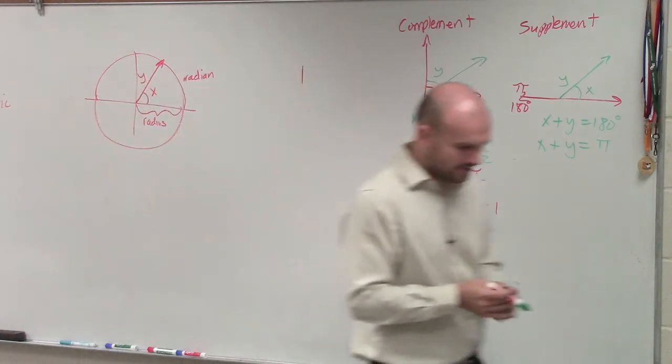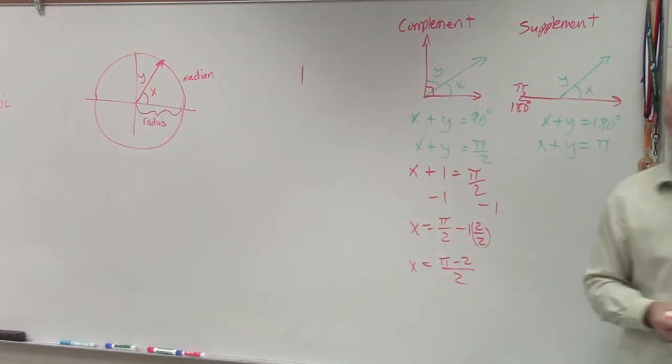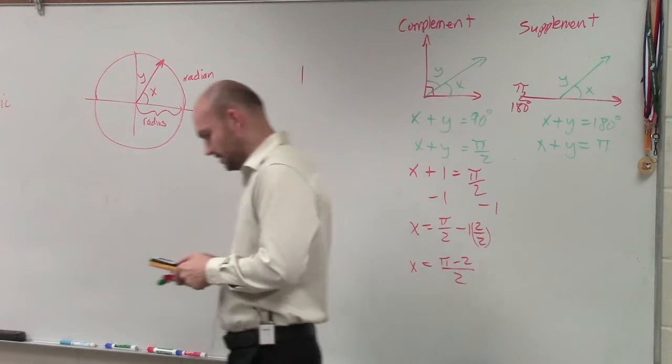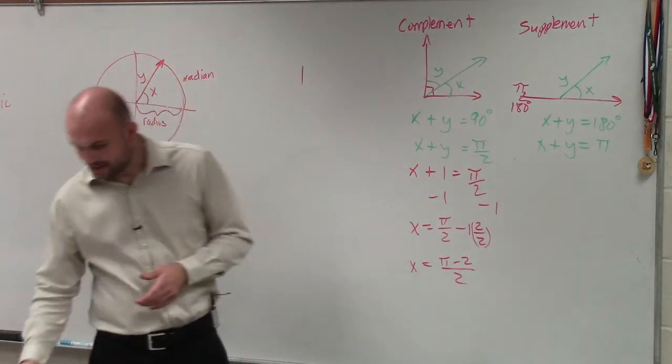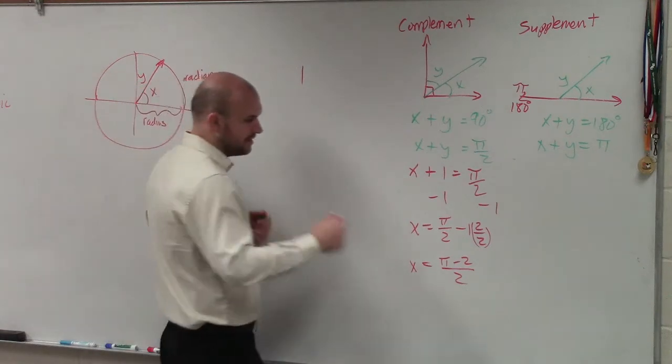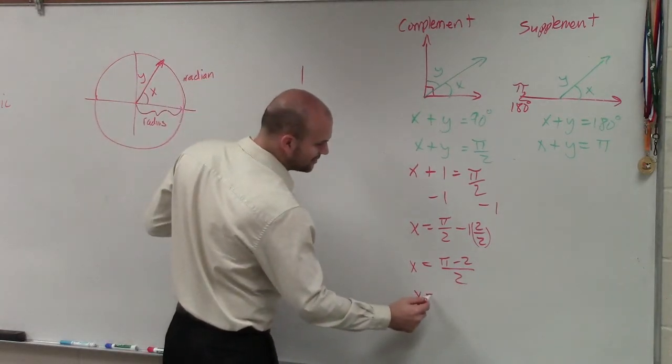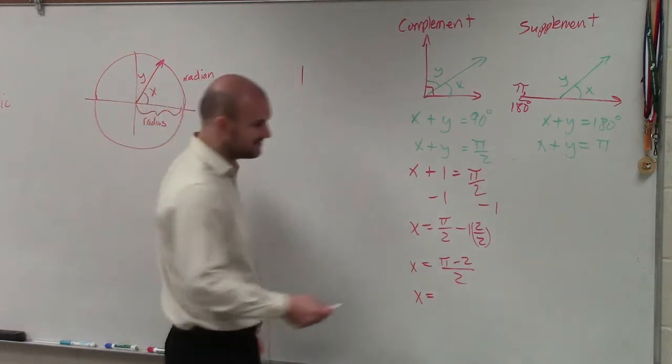Then if they're asking you for decimal form, you can simply take your calculator and do pi minus 2 divided by 2. And that's going to be, in radians, x equals, in rounded form, 0.57.